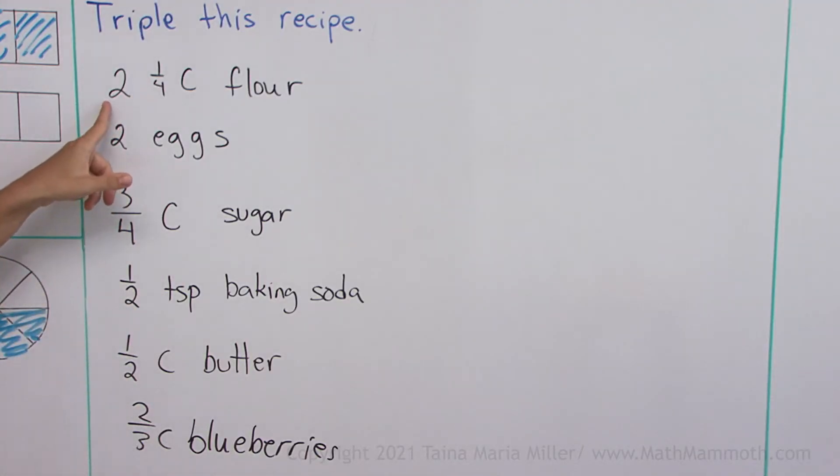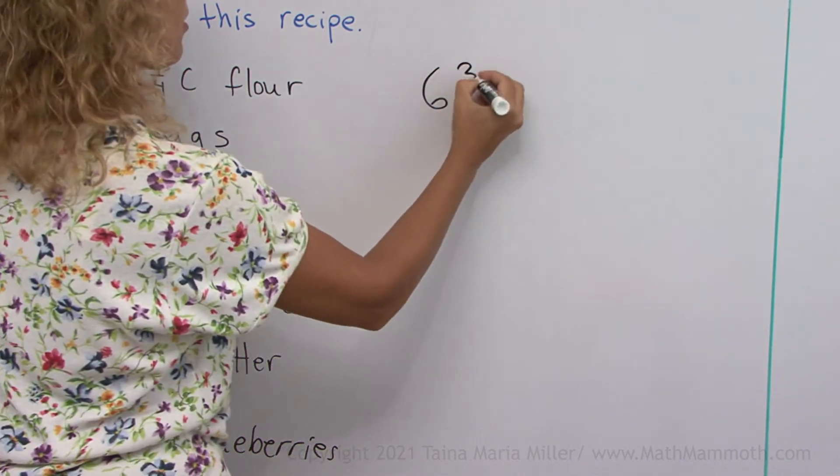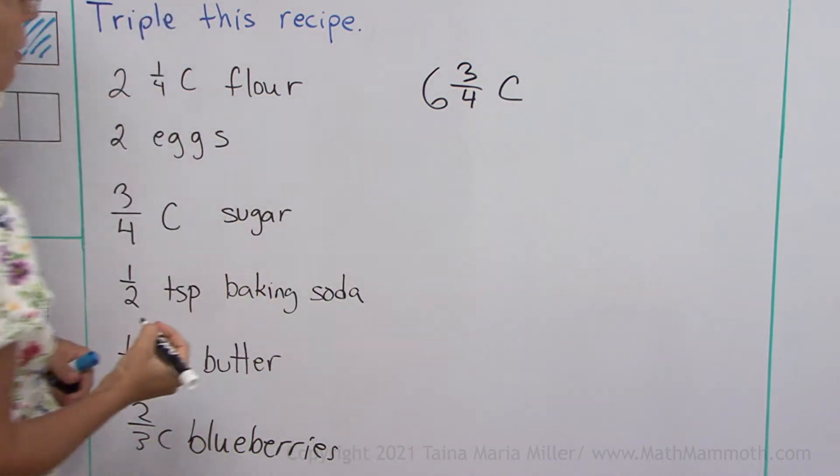This is a mixed number, 2 and 1 fourth. But you can simply go 3 times 2 and 3 times that. So we would get 3 times 2 is 6, of course. And then 3 times 1 fourth, we get 3 fourths. Okay. That was easy.